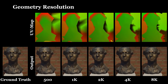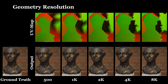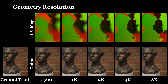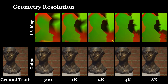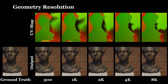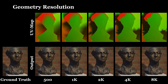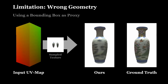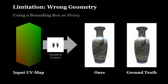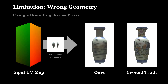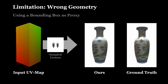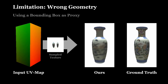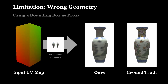This ablation study shows the effect of a reduced resolution of the underlying geometry. Even with a coarse mesh, our approach synthesizes photorealistic results. Here we show an extreme case where the geometry is only a bounding box. Nevertheless, our approach is still able to generate an output image.